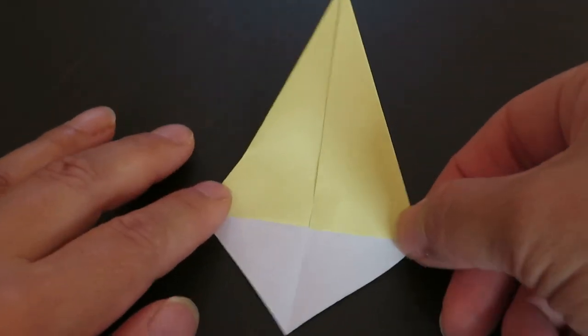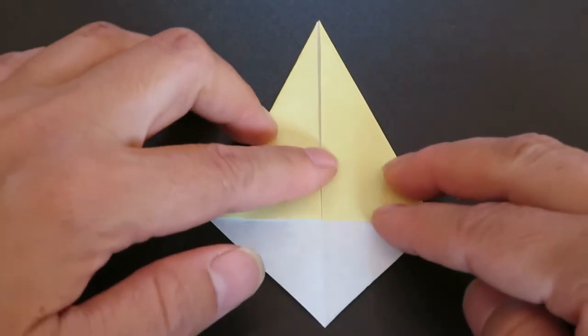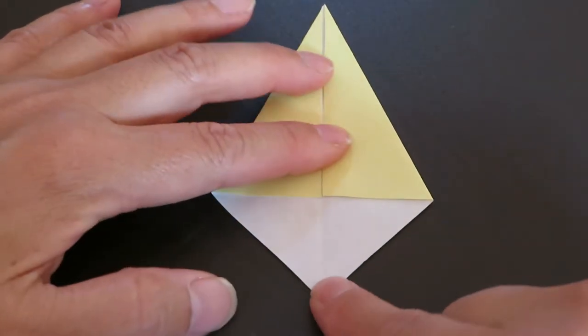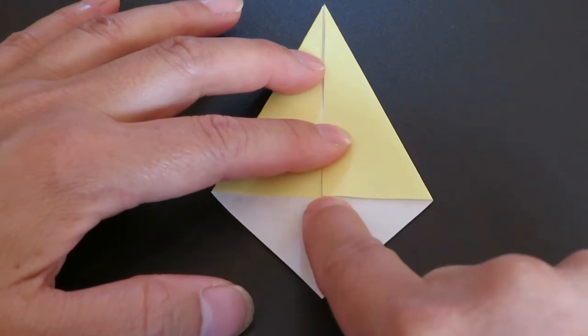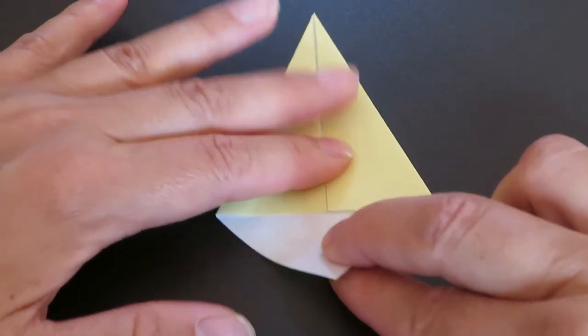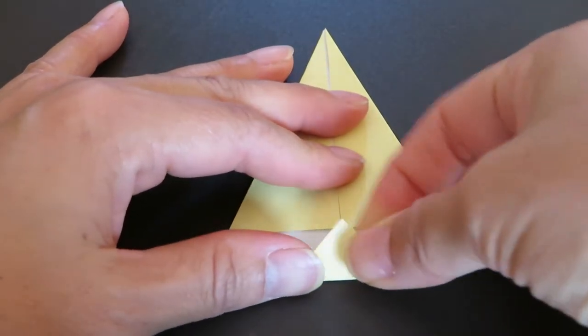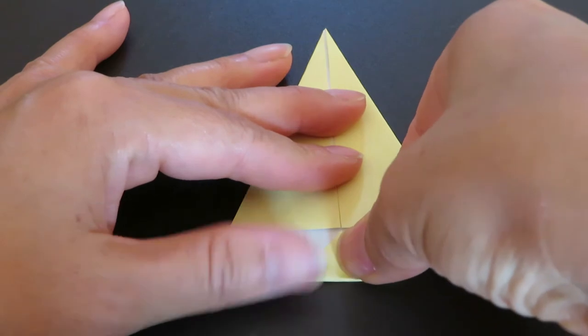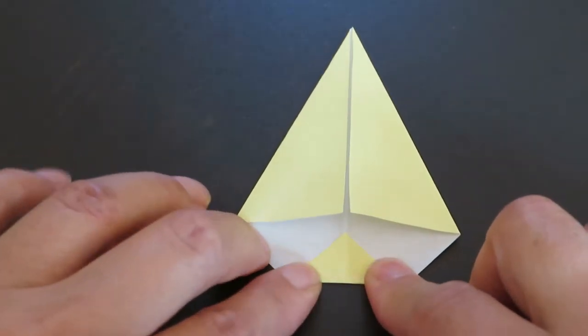Now rotate the origami paper and white triangles come to the bottom. Now match this bottom corner with right here in the middle. So fold the bottom corner up right here and make a good crease.